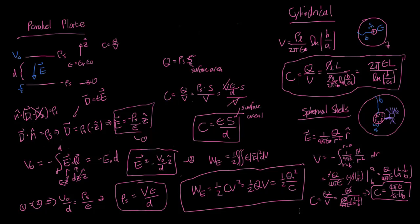One thing to note: if the sphere is sitting alone in the universe — like the Van de Graaff generator in the science museum — and you set the reference to be infinity, then the one over B term goes to zero. In that case, the capacitance for a single spherical shell is simply C equals four pi epsilon A, moving A to the top.